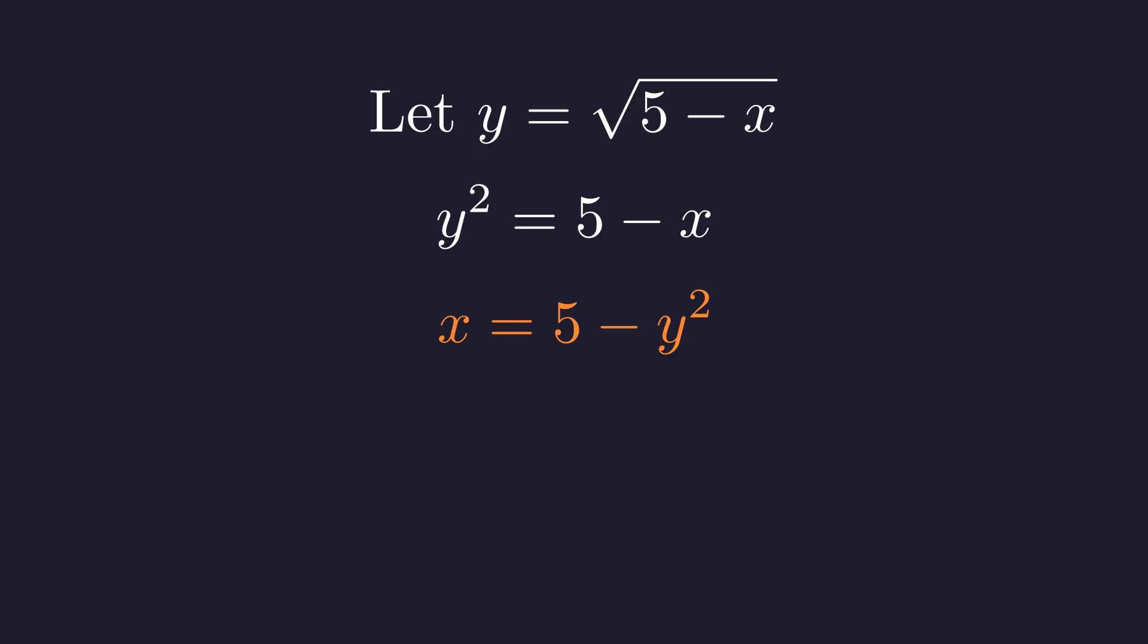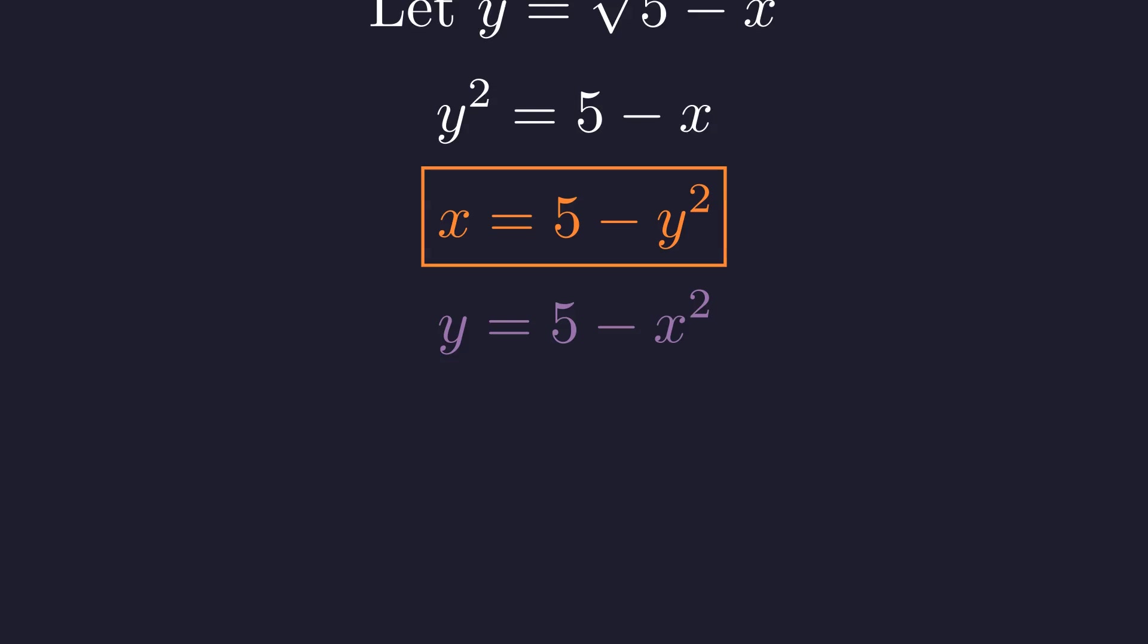Notice the symmetry. If we swap x and y, the form is similar. This gives us our second equation. Y equals five minus x squared. Again, symmetry. Swapping x and y in either equation gives the other.